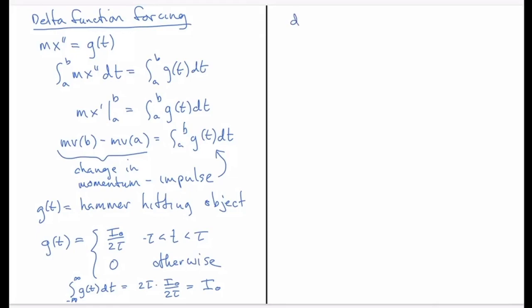Let me abstract away the impulse part and just talk about D_τ(t), which is going to be the same type of function as G but just without the I_not in there. I'll write it in terms of Heaviside functions: U_{-τ}(t) minus U_τ(t), and then multiply that by 1 over 2τ. This is basically G(t) with I_not set to 1.